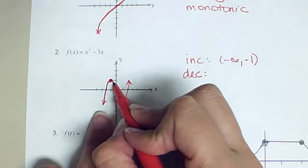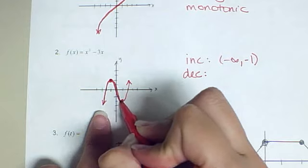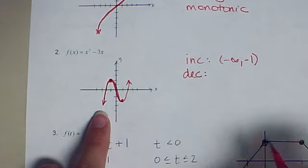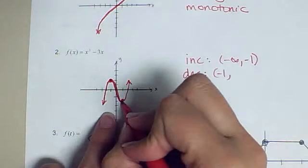Then, at negative 1, it begins to decrease or fall. So it's falling here, decreasing, from negative 1 all the way until right here, which is 1. Again, only looking at the x value.